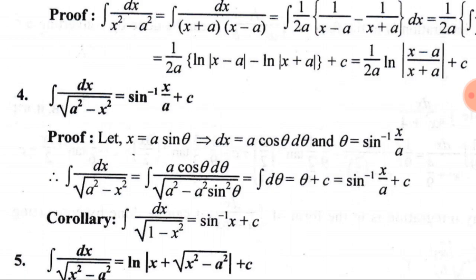Taking a² as common from the denominator, we get √[a²(1 − sin²θ)]. Since 1 − sin²θ = cos²θ, the square root of cos²θ is cos θ. This cos θ in the denominator and the cos θ in the numerator cancel, leaving dθ. The integral of dθ is θ plus constant. Substituting θ = sin⁻¹(x/a), we get ∫dx/√(a²−x²) = sin⁻¹(x/a) + C.